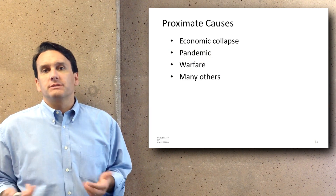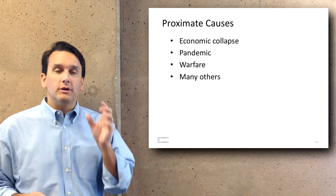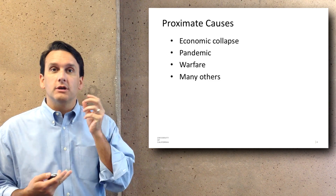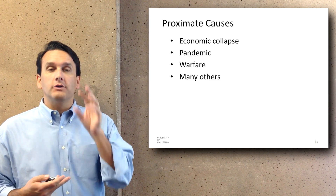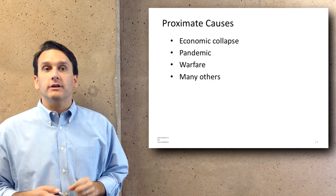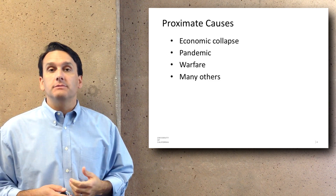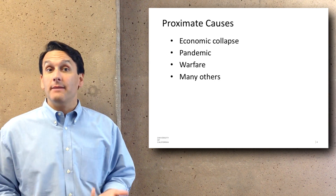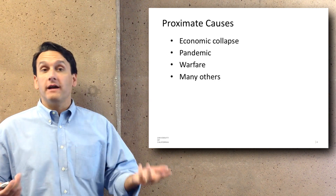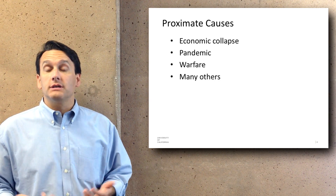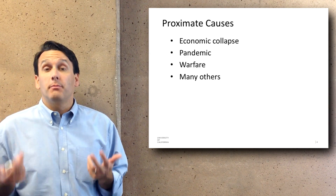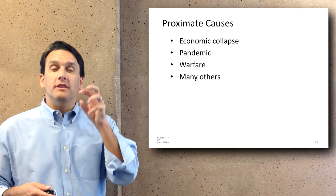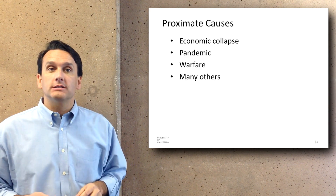There are lots of different proximate causes — the cause that's the nearest one, what immediately triggered the collapse. Economic collapse sometimes leads to it, some sort of pandemic disease, warfare with neighbors, and there are lots of other possible reasons for the immediate cause of a collapse.